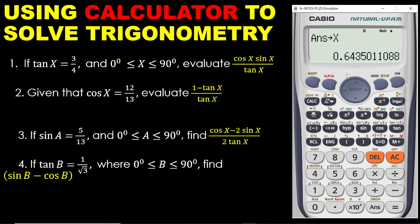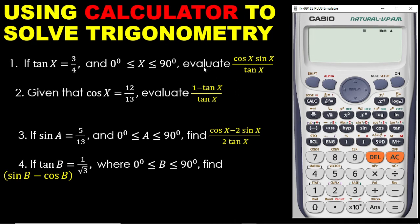Now let's see what we have. I want to find out tan X — press tan, then alpha, then X, close the bracket — am I going to get 3 over 4? Press equal to. Now you are seeing 3 over 4. The question now says evaluate cos X times sin X all over tan X. We are going to enter this information on the calculator.